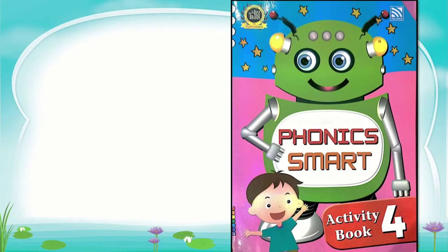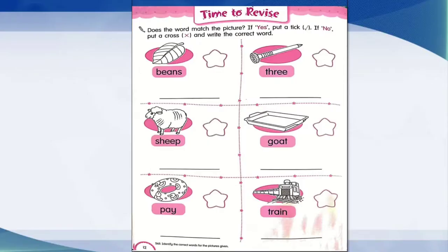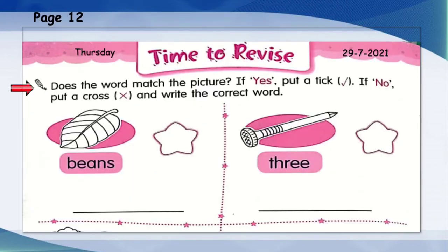So now let's take your activity book for Smart Phonics and turn to page 12. Now let's write today's day, Thursday, and the date 29 July 2021. Now let's read the title and instruction. Time to revise. Does the word match the picture? If yes, put a tick. If no, put a cross and write the correct word.